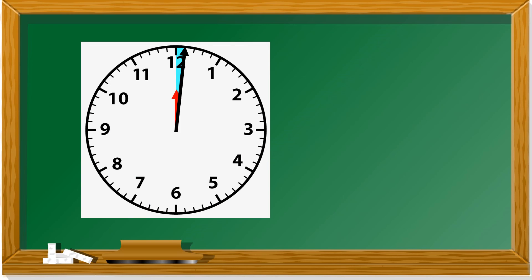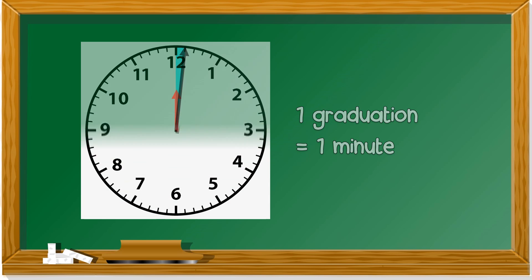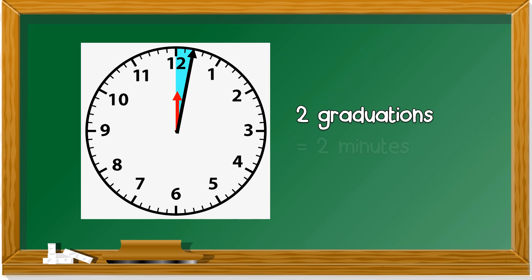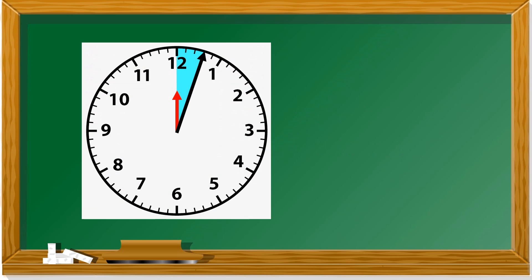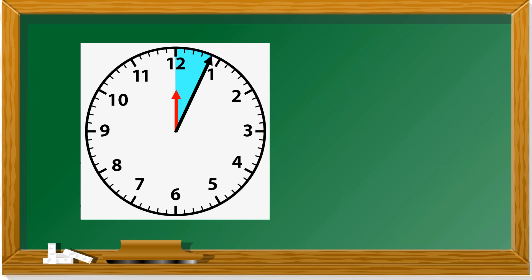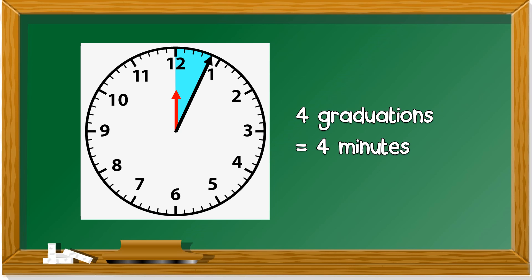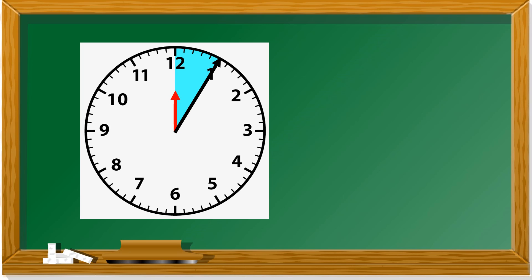Let's take a look at this. When the minute hand moves one line, it's one graduation, which is one minute. Next, two graduations — two minutes. Three graduations, three minutes. Four graduations, four minutes. Between two numbers there are five graduations, which is five minutes.